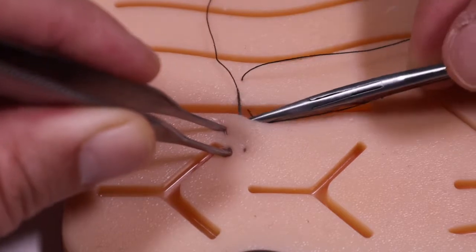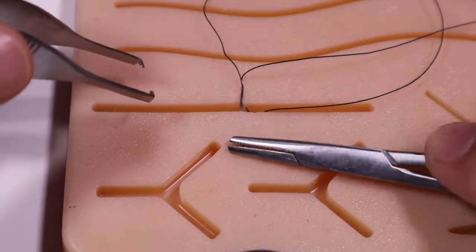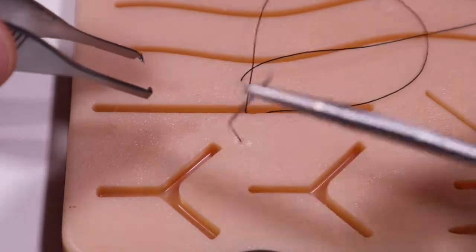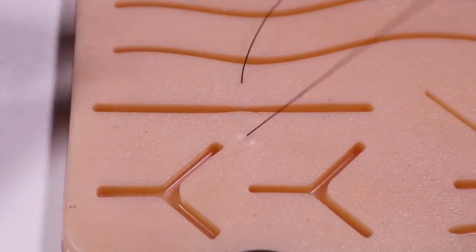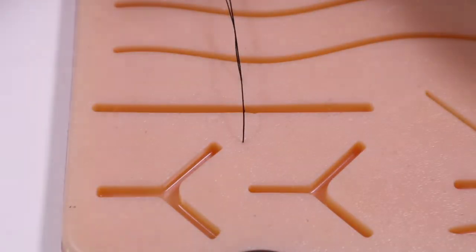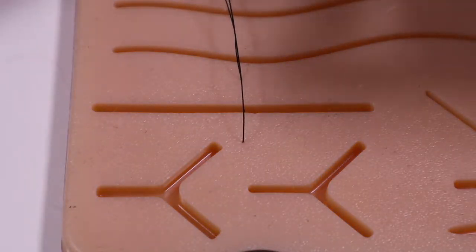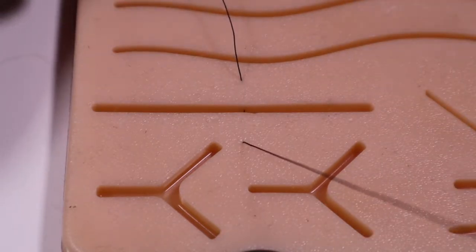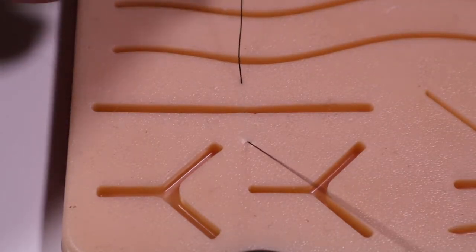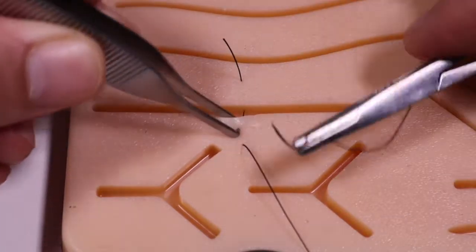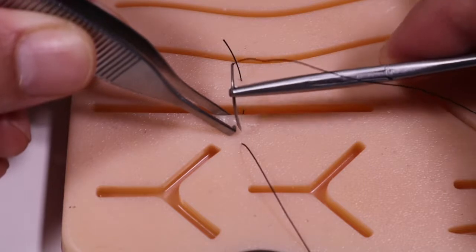Just as all the other suture techniques, we want to stay in the same plane as far as depth goes and come out about the same distance on the proximal side as we did on the far side. So we've got that passed through. We're going to reverse load our needle and backwards pass.